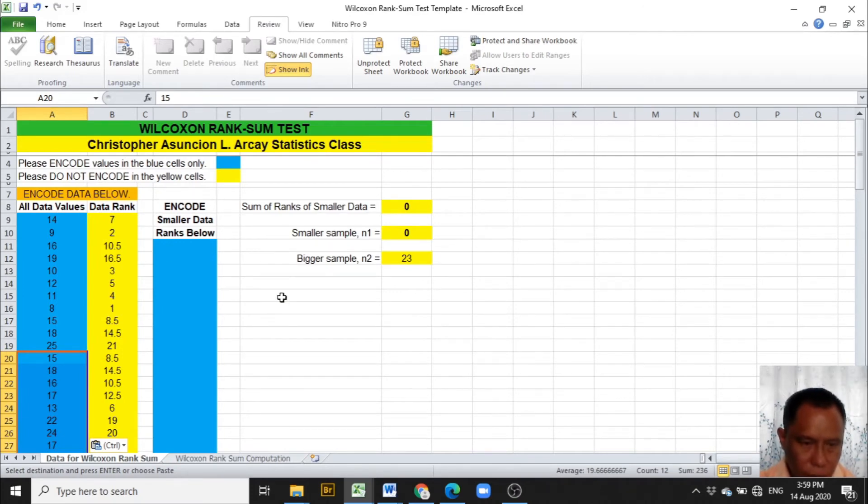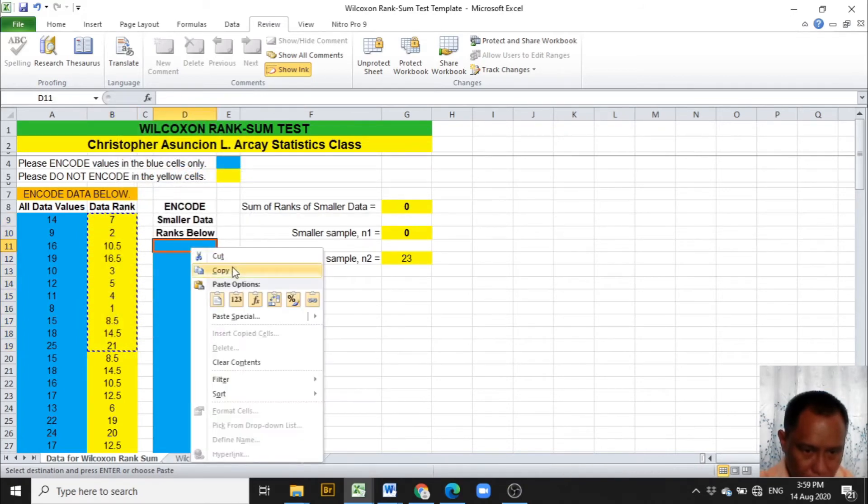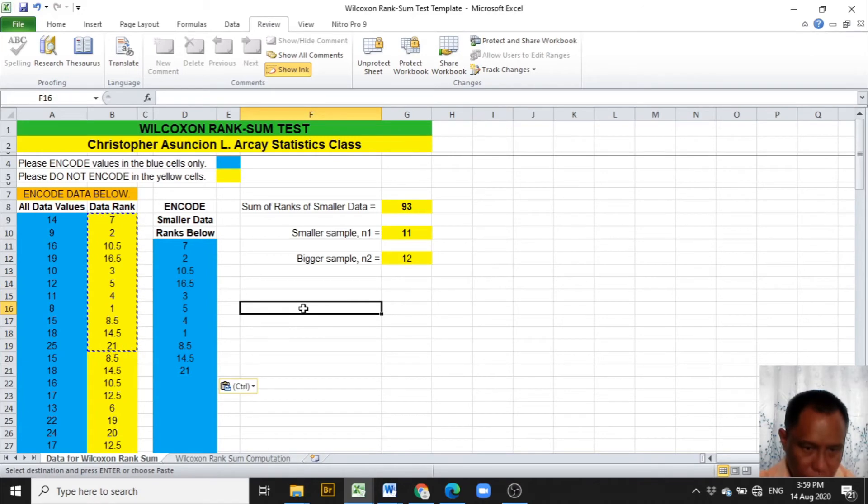Now that we are done encoding the data in Excel, we are going to copy the data ranks of the smaller group of data into column D. Take note that the last three values of the first group of data are 15, 18, and 25. So we have to copy the data ranks until the data rank of 25. Copy and then paste. After pasting the data, we are given that the sum of ranks of smaller data is 93, and the smaller sample from the Marines is 11. Bigger sample from the Army is 12. This will be used in the computation of the Wilcoxon rank sum.